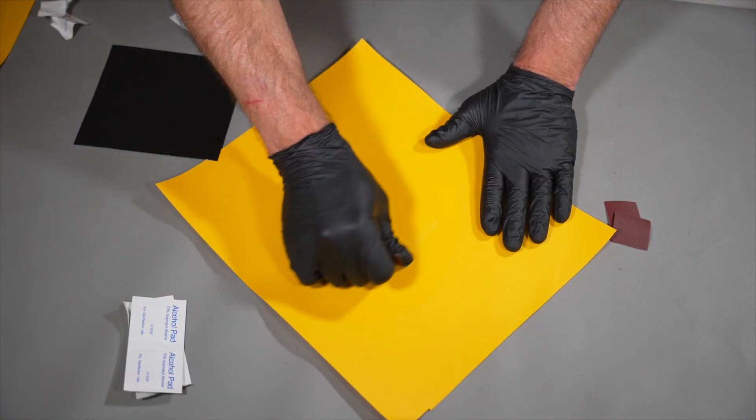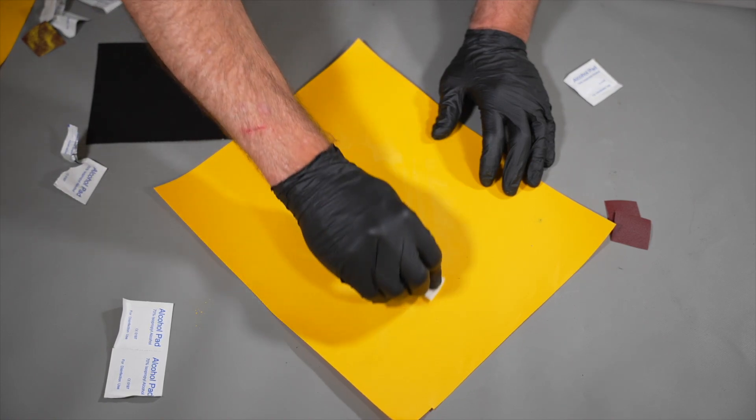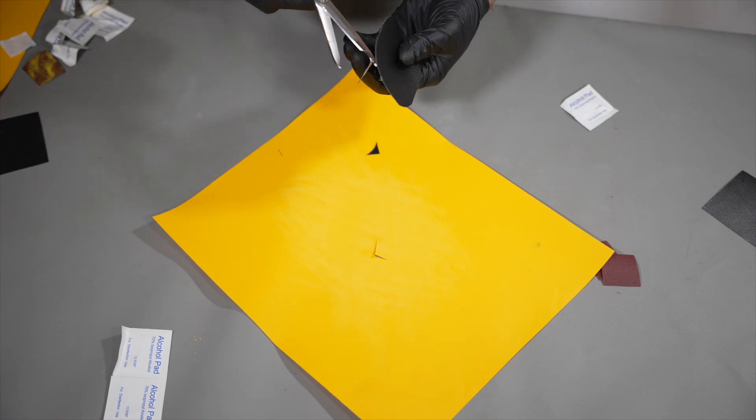Scuff the cleaned surface using the included 180-grit sandpaper. Once the adhesion area is prepped and clean, cut out a rounded patch that covers the hole by at least 1 inch on all sides.